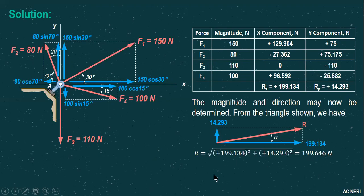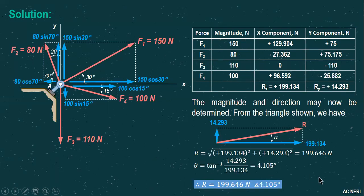Solve for alpha using arctan of Ry over Rx. When expressing the resultant, it must contain both magnitude and direction because the resultant R is a force and force is a vector quantity.